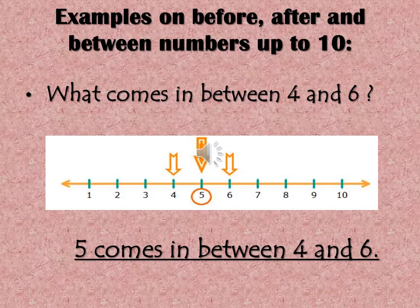Six. So my question is: what comes between four and six? What is the middle number between four and six? What comes after four? Five. What comes after five? Six. So five is between the numbers, six is the after number, and four is the before number. Five comes in between four and six.